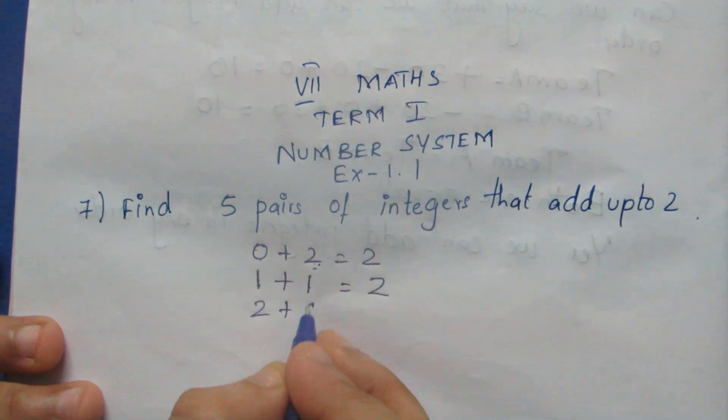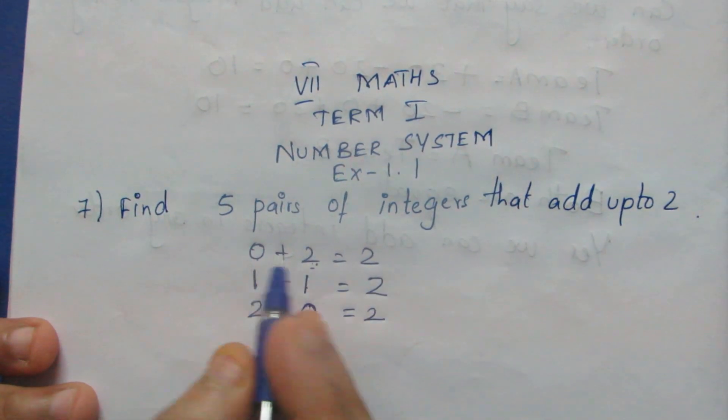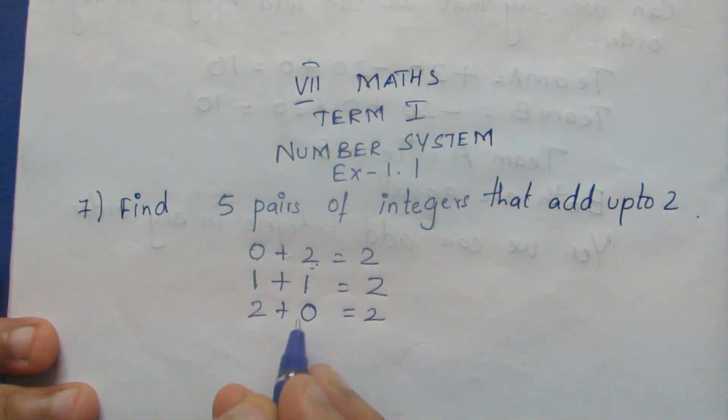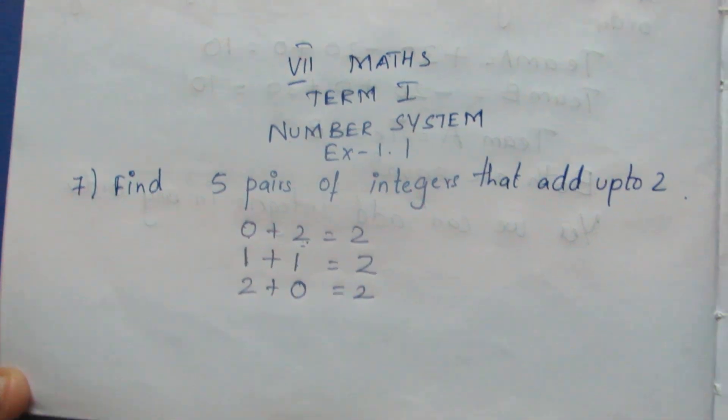Minus 1 is equal to 2. Sometimes, what do you do? 0 plus 2 is equal to 2 plus 0. You can write that same thing.